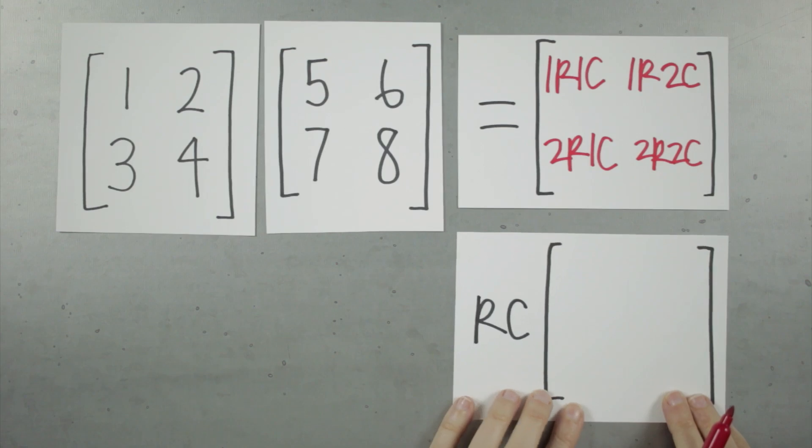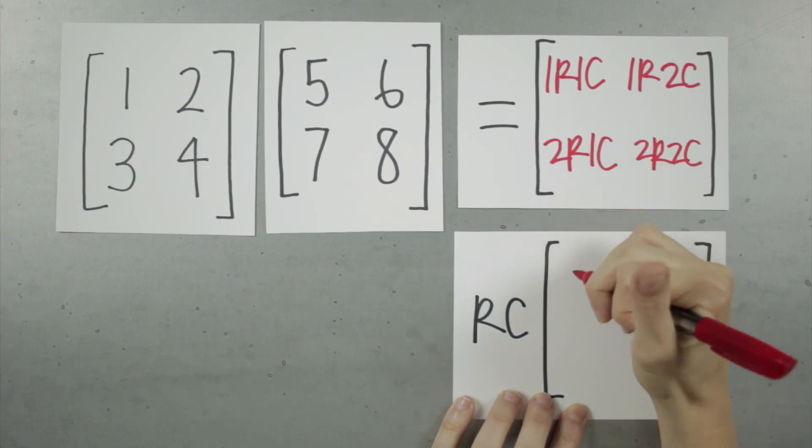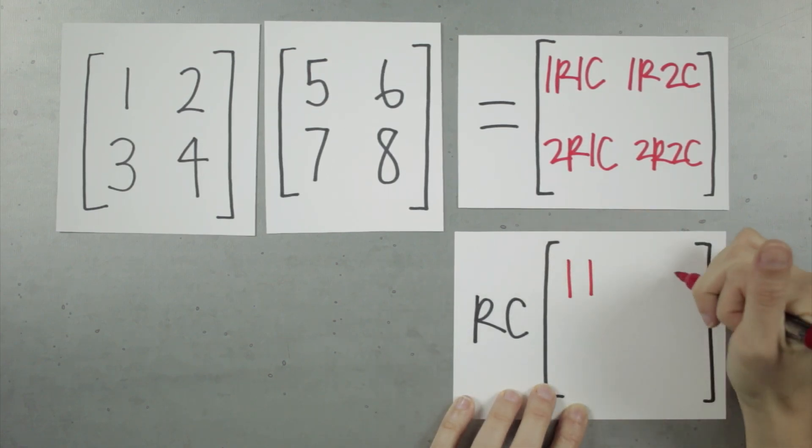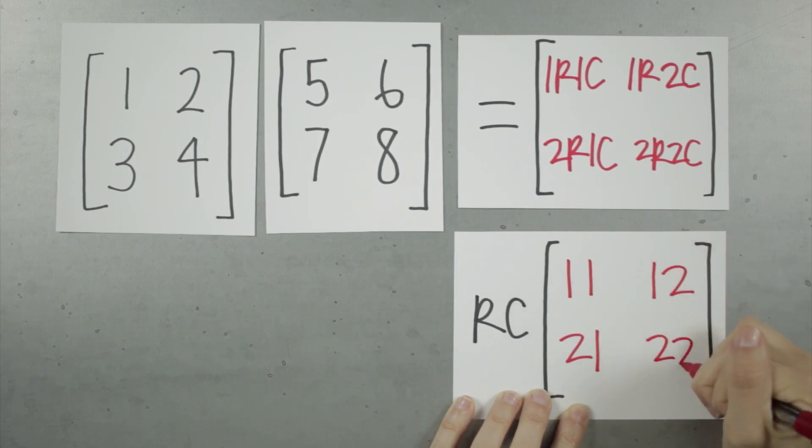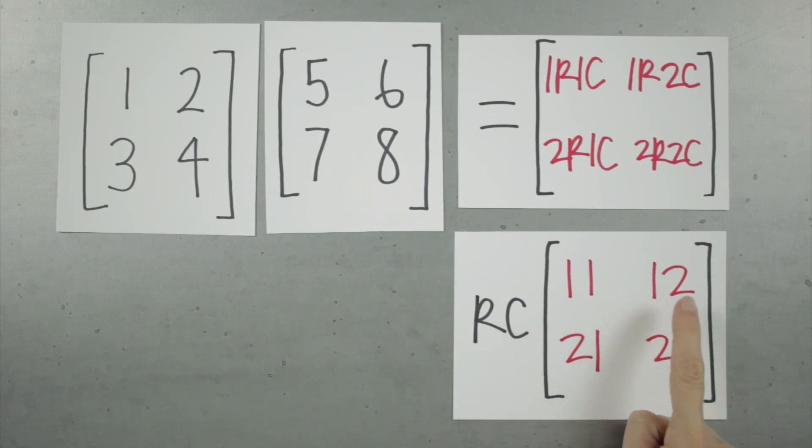Now if we factor out this RC row column abbreviation, we're left with 11, 12, 21, and 22. Don't forget, these aren't real numbers. They're just representations of the first row by the first column, first row by the second column, etc. So 11, 12, 21, 22 is just an easy way to remember what to do.